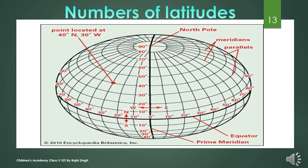Now we will see how parallels and meridians help us to locate places. The parallels or lines of latitude and meridians or lines of longitude form a network on the globe called a grid. The point at which a latitude and longitude meet helps us to locate a place. For example, New Delhi is located at 28° North latitude and 77° East longitude, and where these two lines meet on the globe is the location of New Delhi.